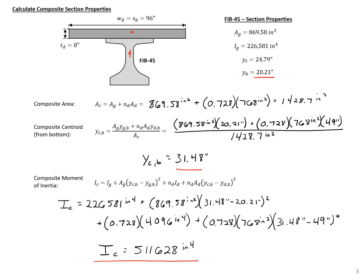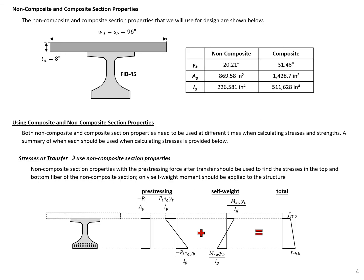We now have our composite moment of inertia, composite centroid, and composite area. Shown here are both the non-composite and composite section properties for our section, which we will use to check our stresses.